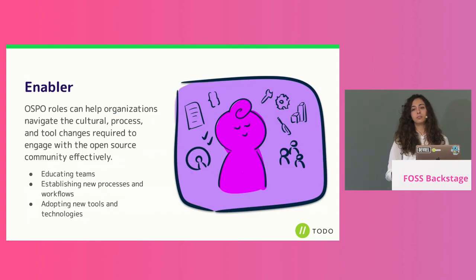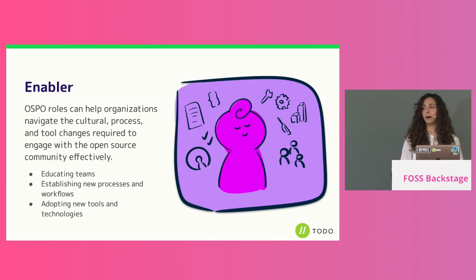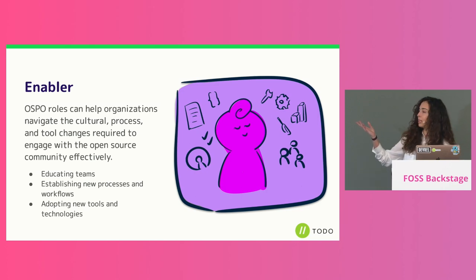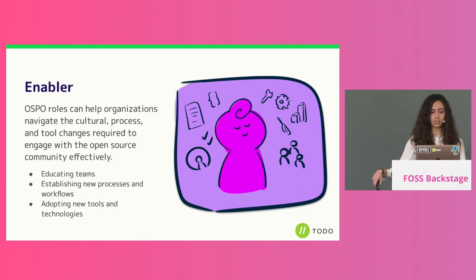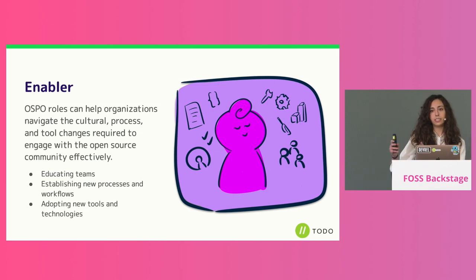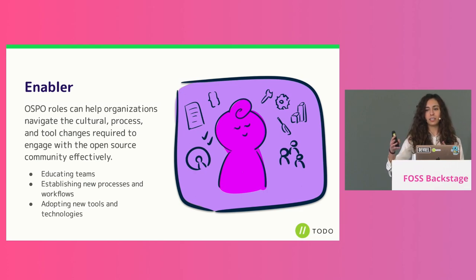The OSPO can take on many different skills and responsibilities. The first one is the Enabler — basically focused on educating different teams in the organization and helping to navigate all the cultural, process, and tool changes required for the organization to shift into an open source dynamic. This can be quite hard for some organizations and easier for others.